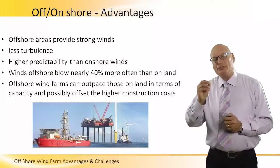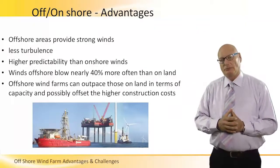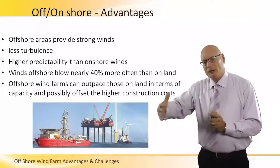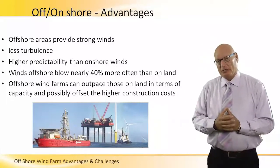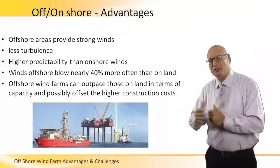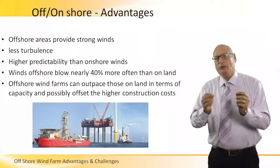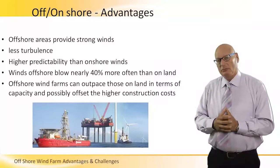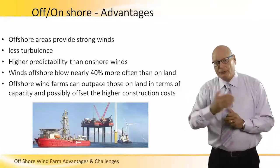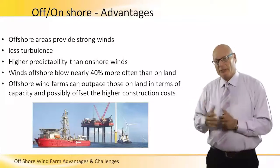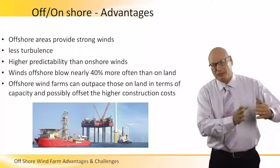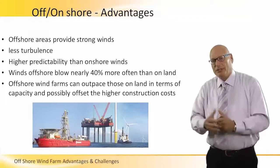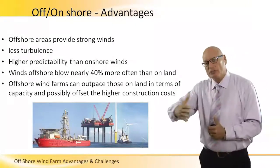Winds offshore blow nearly 40 percent more often than on land because the wind has no obstacles — it just runs and flows. Because it's flat and there are no obstacles, there is 40 percent more effective movement of air. Onshore, winds hit a mountain, get reflected to another mountain, reflected to a valley, and there are times there's no wind at all onshore. Offshore gives smooth flow.